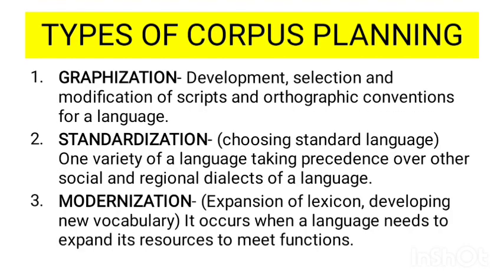There are three types of corpus planning: graphization, standardization, and modernization. Graphization refers to the development, selection, and modification of scripts and orthographic conventions of a language. Standardization means choosing that script as the standard language — one variety of a language takes precedence over other social and regional dialects. The third type, modernization, involves expansion of the lexicon and development of vocabulary. It occurs when a language needs to expand its resources to meet new functions.